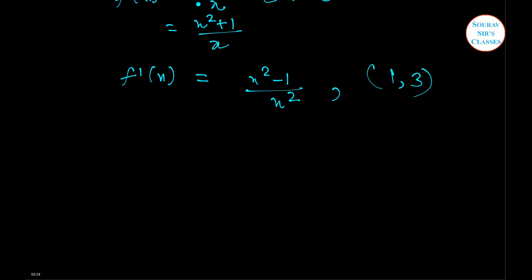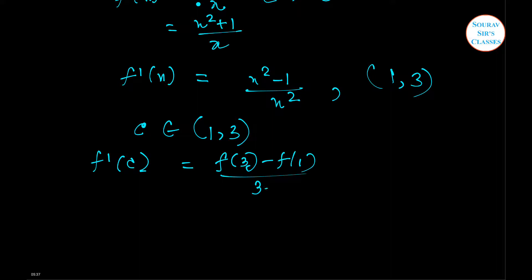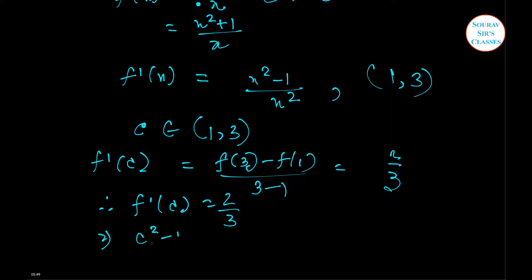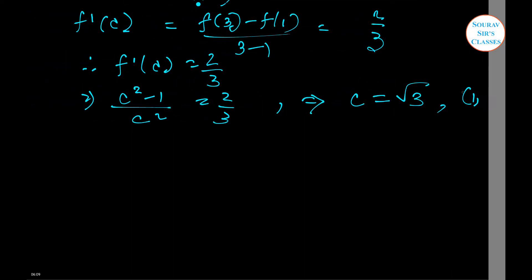As it satisfies both conditions of Lagrange's mean value theorem, therefore for some value of c which belongs to the open interval of 1 and 3, we are going to have f'(c) equal to f(3) minus f(1) divided by 3 minus 1, which gives us 2 by 3. Therefore, setting c squared minus 1 divided by c squared equal to 2 by 3 and solving, we find the value of c as root 3. We already know that root 3 belongs in the open interval of 1 and 3. Thus this was Lagrange's mean value theorem.